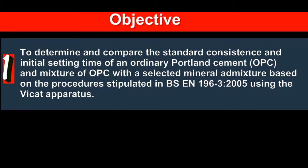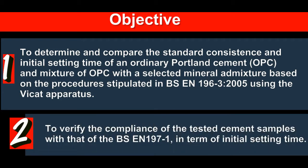Objectives: 1. To determine and compare the standard consistence and initial setting time of an ordinary Portland cement (OPC) and a mixture of OPC with a selected mineral admixture, based on the procedures stipulated in BSEN 196-3:2005 using the VICAT apparatus. 2. To verify the compliance of the tested cement samples with BSEN 197-1 in terms of initial setting time.